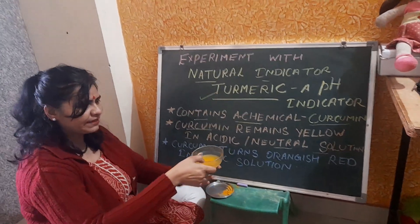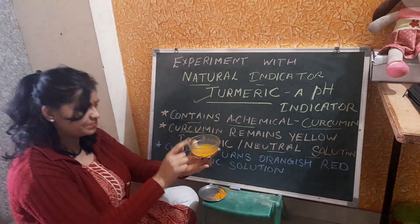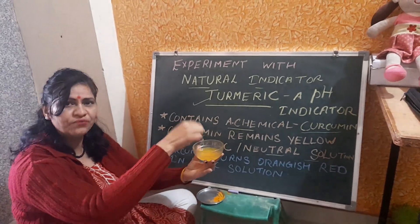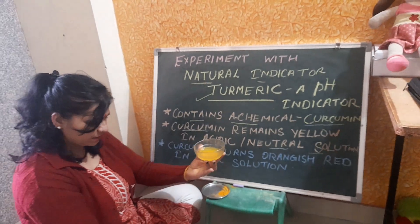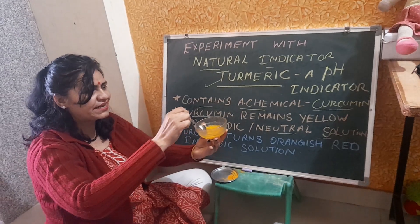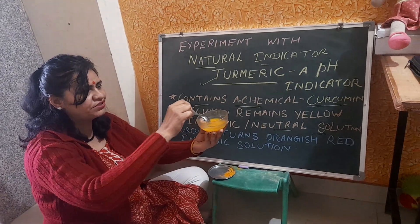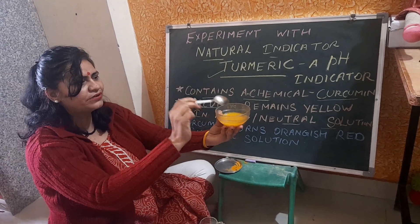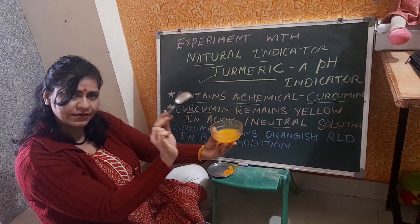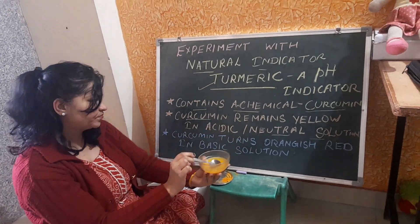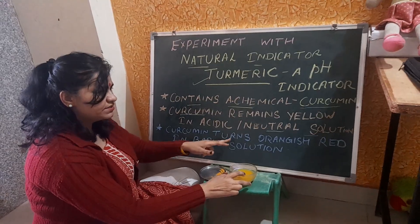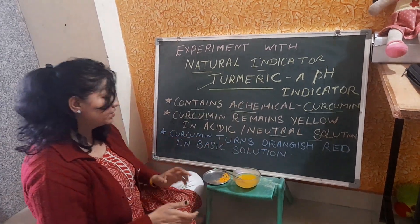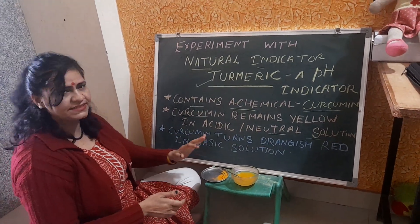We have mixed some turmeric powder in water. This is the aqueous solution of turmeric. You can see the color of this solution — it is yellow in color. But this curcumin turns orangish or reddish in color in a basic solution.